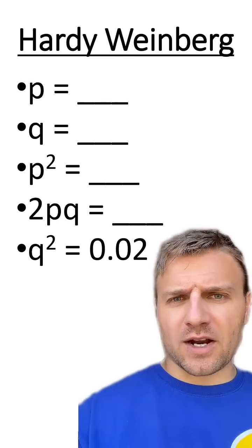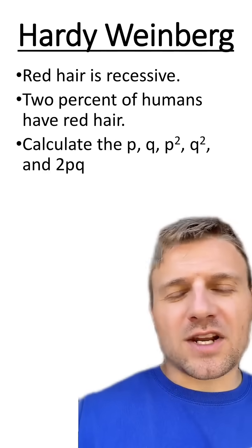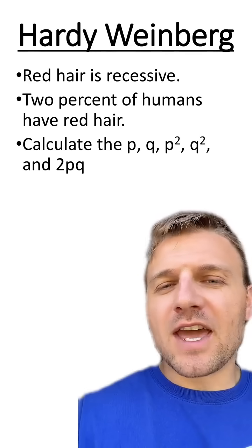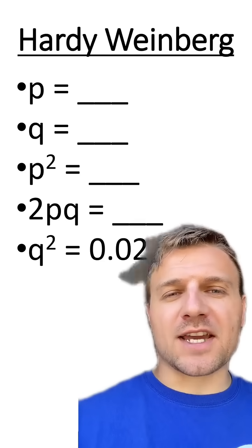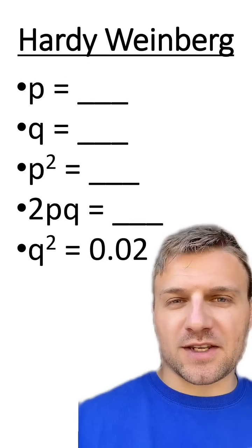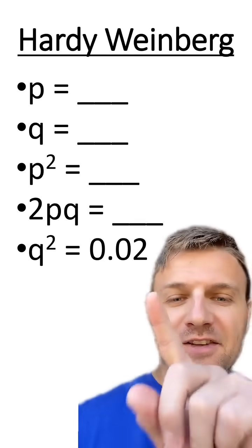First of all, we already know q squared. This is because in our question, it already tells us that red hair is recessive and 2% of humans have red hair. So this q squared is just representing the homozygous recessive genotype frequency, which is 2%. Now, since we know this, we can figure out what q is.